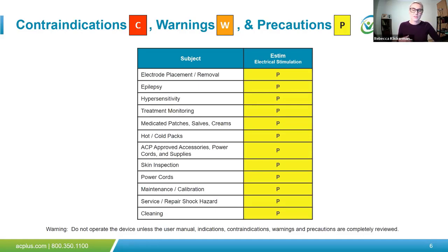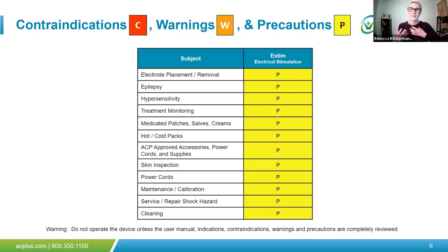Epilepsy is listed as a precaution on a patient-by-patient basis — follow precautions recommended by the patient's physician and review the patient's history. Hypersensitivity is a precaution — take caution with patients exhibiting psychological or physical hypersensitivity to treatment. You can demonstrate the protocol on yourself to help put patients at ease, showing them that we target only a consistent muscle twitch with no tetany. If a patient experiences hypersensitivity, reduce the intensity and attempt to gain their confidence and cooperation. If they remain too hypersensitive, it may not be advised to proceed, but there are steps you can take to build their comfort.